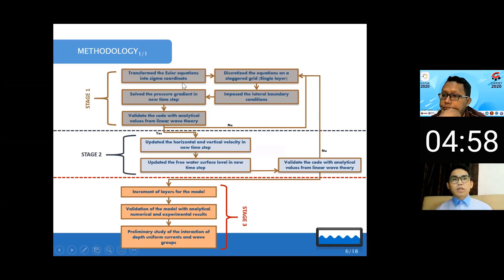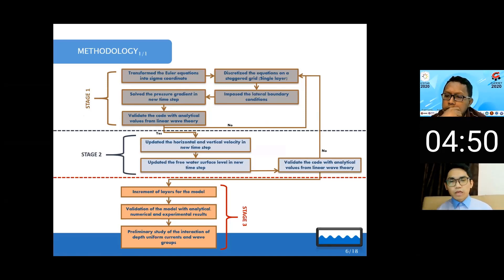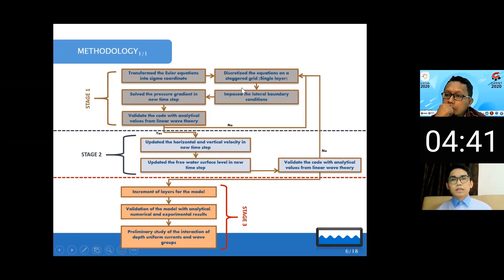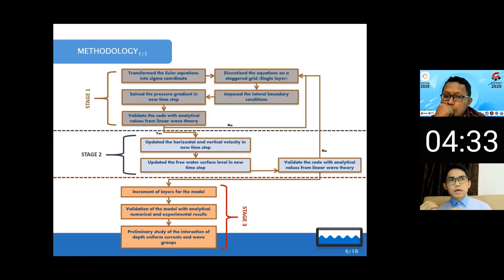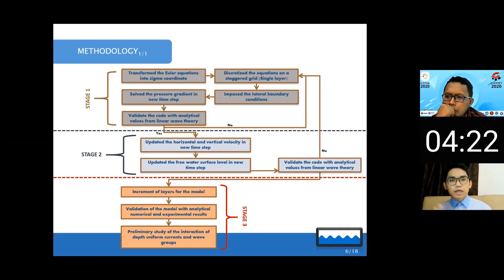This is the methodology. We have three stages. The first stage is to solve the Euler equations — the wave equations we are using for our study — and we transform them into what we call sigma coordinates, which I will explain in the next two slides. The next step is to discretize these equations, transforming them from mathematical form into a form understandable by the code. Then we impose boundary conditions, meaning the input and output of our tank, and solve for the pressure.